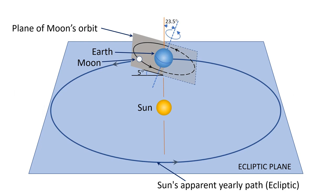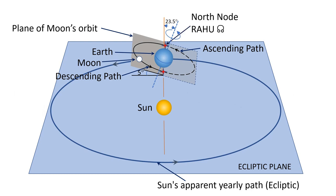The Moon's orbit crosses the ecliptic plane at two locations. The first is when the Moon is on the ascending path, and the second is when the Moon is on the descending path. The intersection on the ascending path is called the North Node, and we call this Rahu in Vedic Astrology. The intersection on the descending path is called the South Node and is referred to as Ketu in Vedic Astrology.